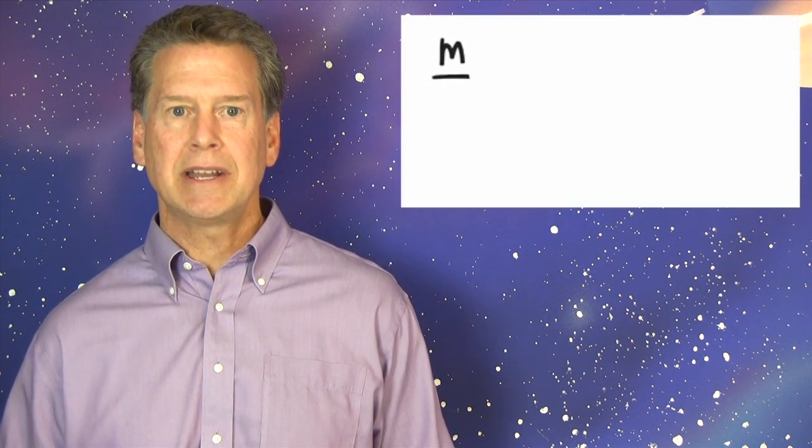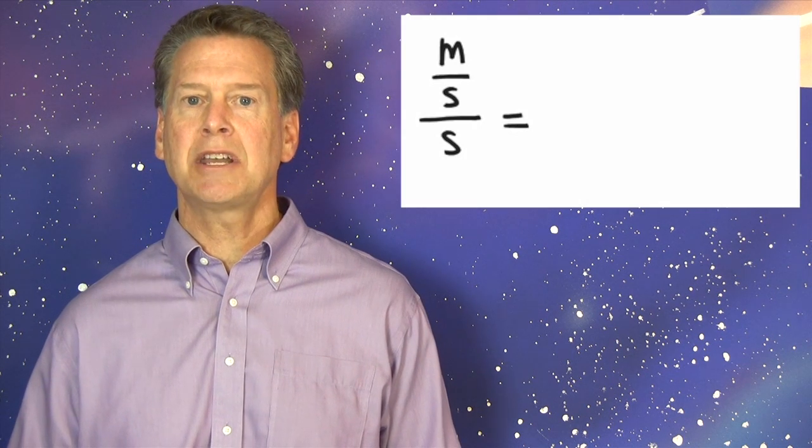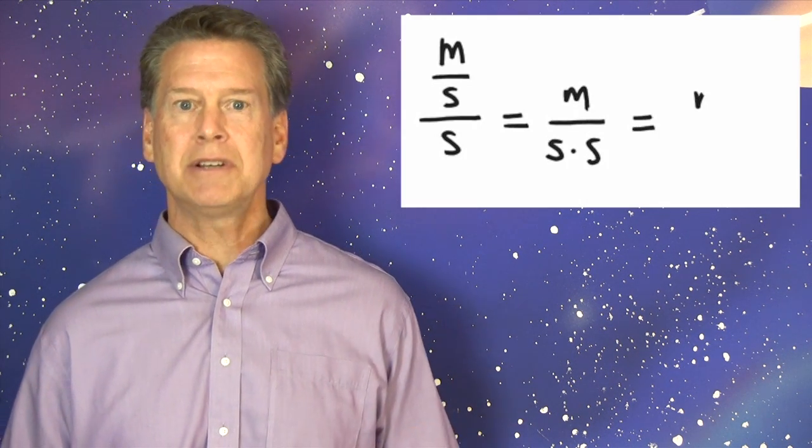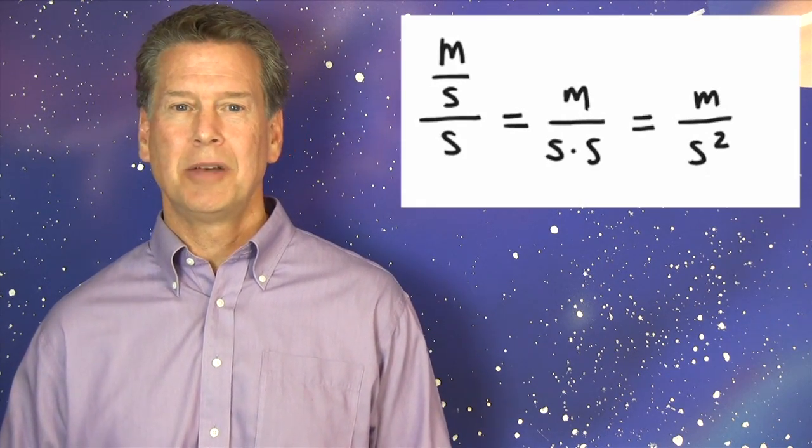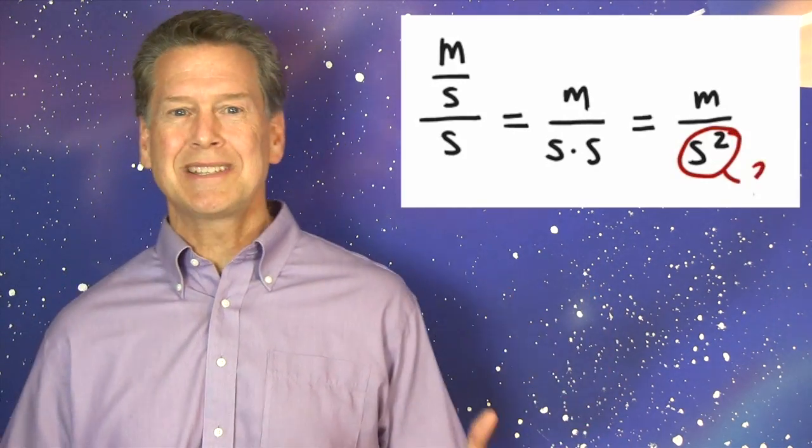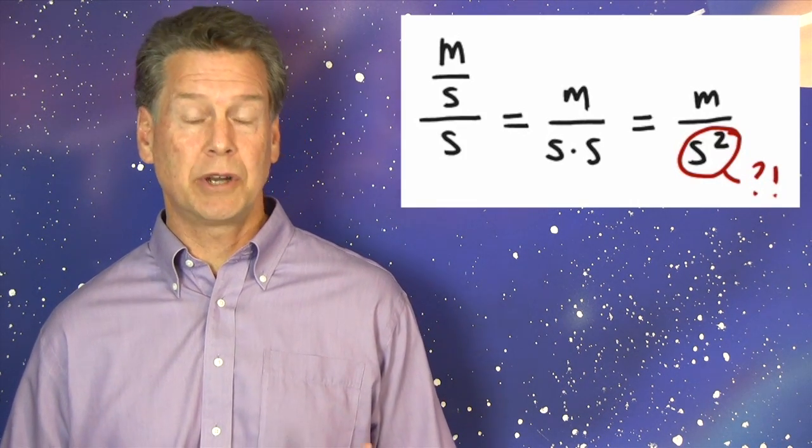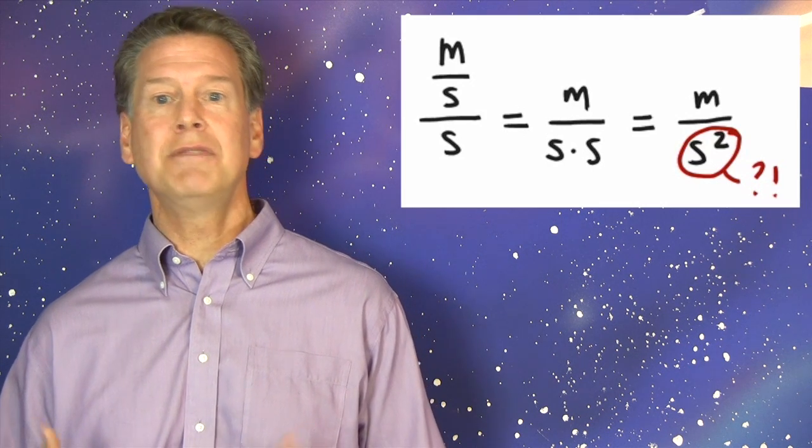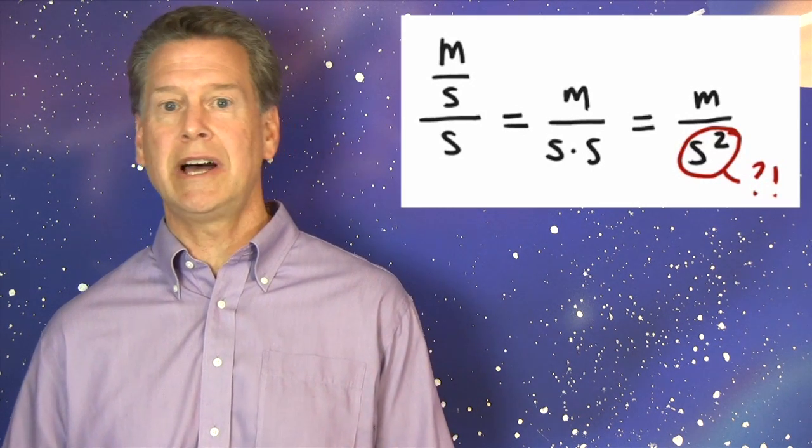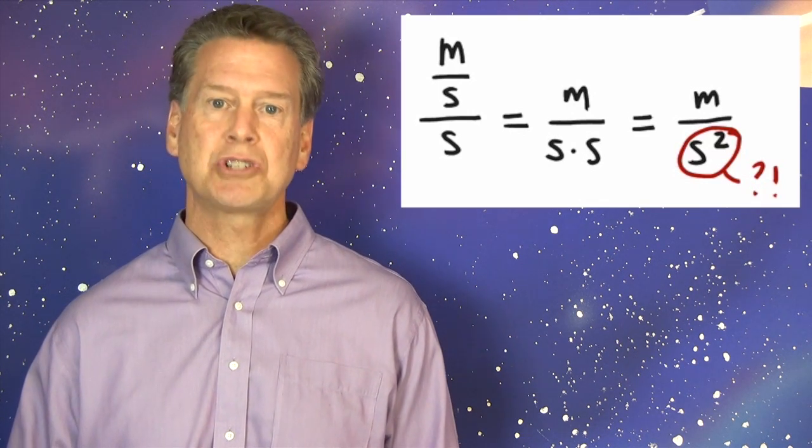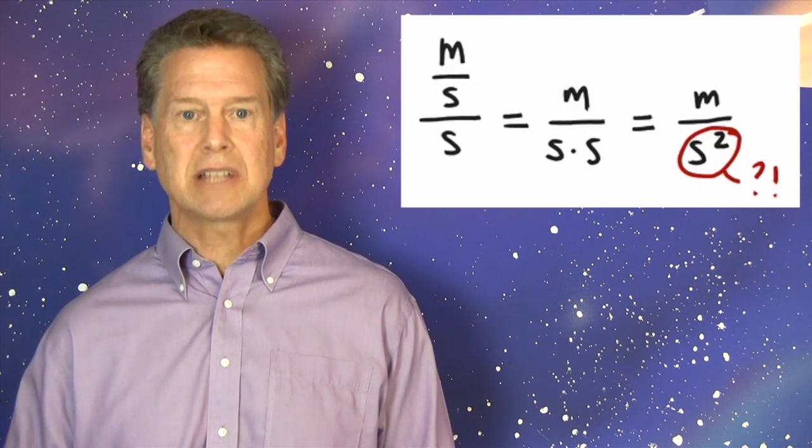By the way, we can use a mathematical shorthand for this unit. A meter divided by a second divided by a second is mathematically equivalent to a meter divided by a second times a second. That's a meter divided by a second squared. But look at that denominator! What is a square second? No one knows, conceptually, what a square second is. No one can visualize it the way you can visualize a square meter, say. At best, a square second is just a mathematical shorthand for a second times a second.